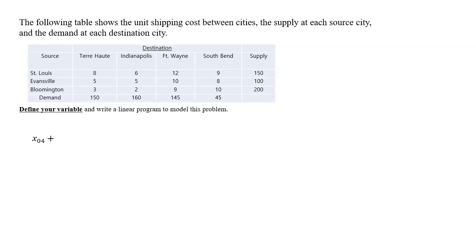The following table shows the unit shipping cost between cities, the supply at each source city, and the demand at each destination city. Define your variable and write a linear program to model this problem.